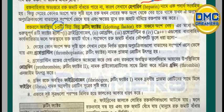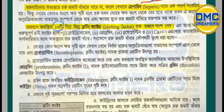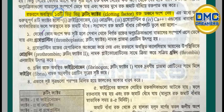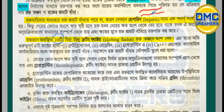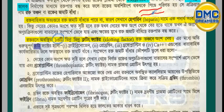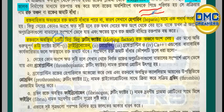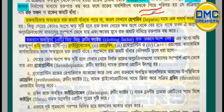There are four must-to-know primary clotting factors. Factor 1 is fibrinogen, factor 2 is prothrombin, factor 3 is thromboplastin, and factor 4 is calcium. These are the four essential clotting factors you must remember.